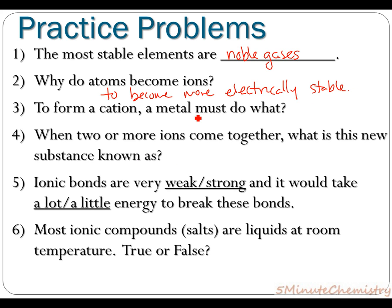In order to form a cation, a metal must do what? A metal must lose electrons.